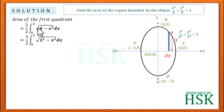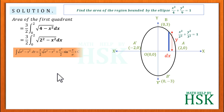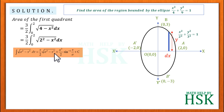We write 4 as 2² to apply the standard formula: ∫√(a² − x²) dx = (x/2)√(a² − x²) + (a²/2) sin⁻¹(x/a) + C.